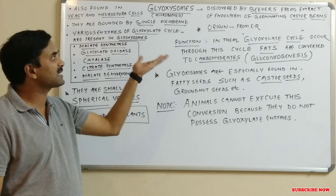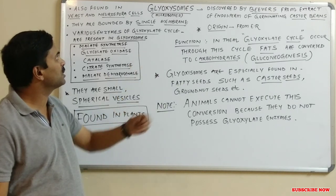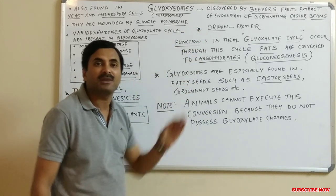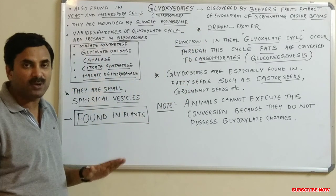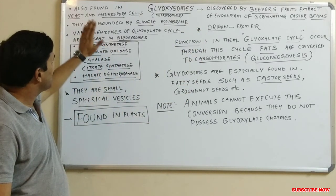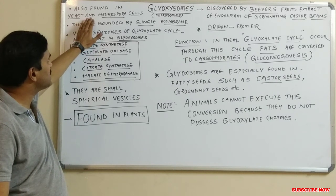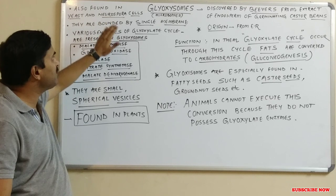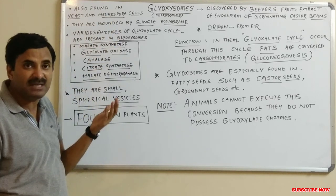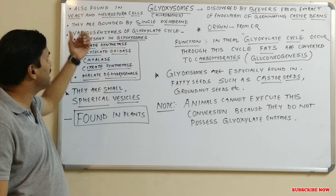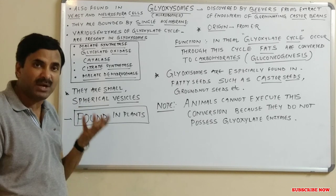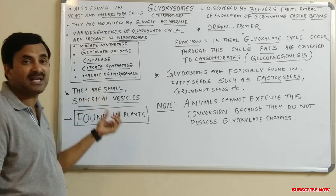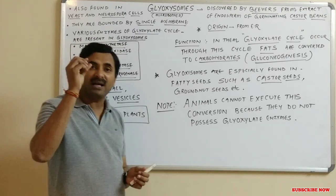Glyoxysomes have originated from the endoplasmic reticulum. They are also found in yeast and Neurospora cells — they are not only found in castor beans but also in yeast and Neurospora cells.